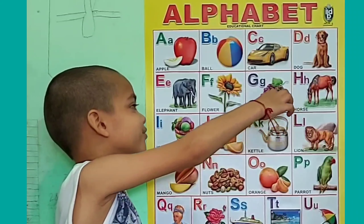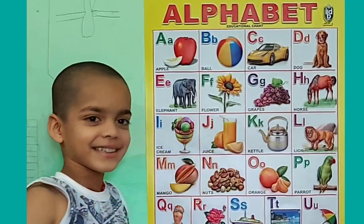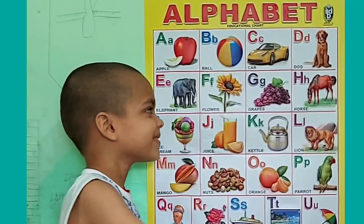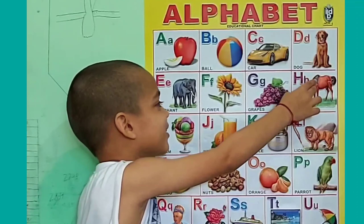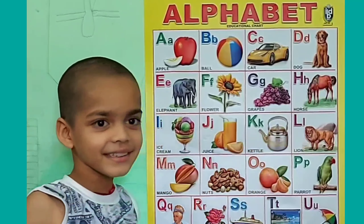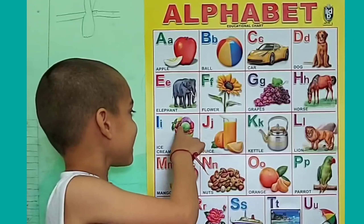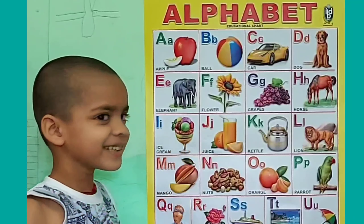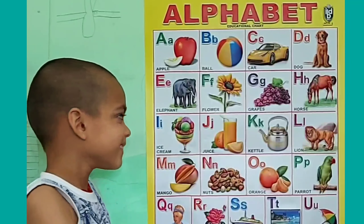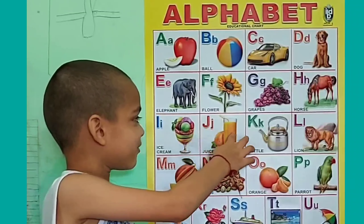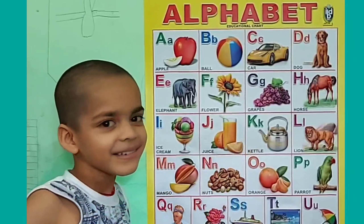G for grass, H for horse, I for ice cream, J for juice.